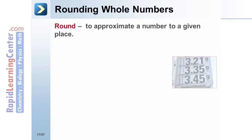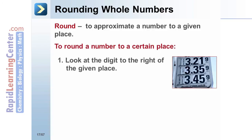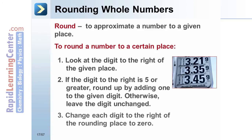Rounding whole numbers: to round a number to a certain place, (1) look at the digit to the right of the given place; (2) if the digit to the right is 5 or greater, round up by adding 1 to the given digit, otherwise leave the digit unchanged; (3) change each digit to the right of the rounding place to zero.